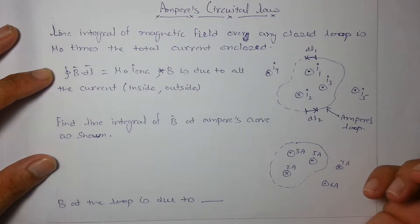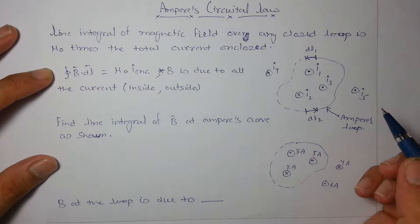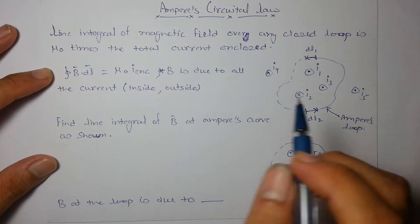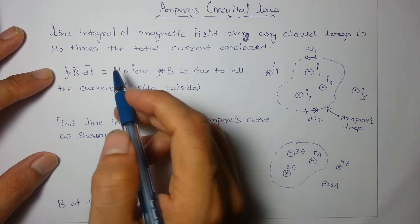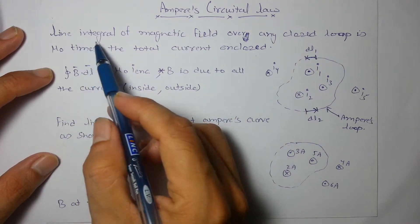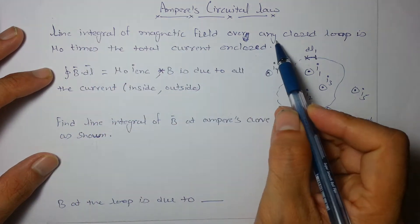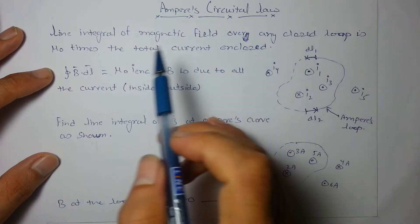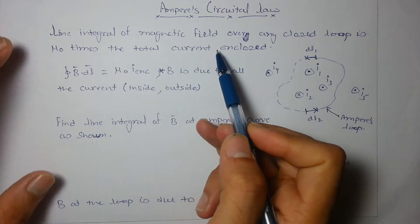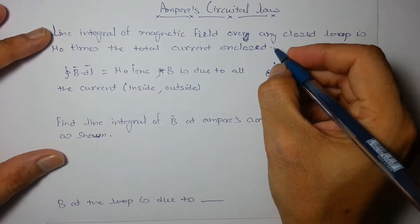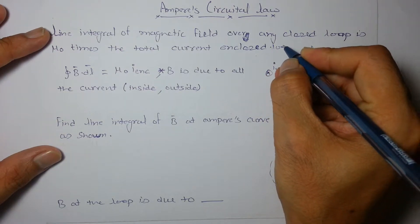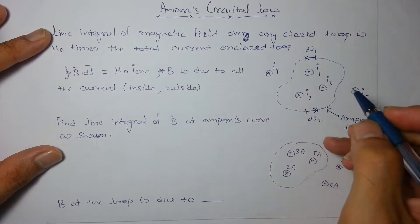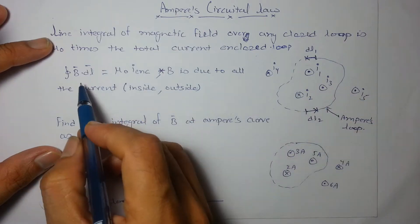Hello friends, in this video we will learn the basics of Ampere's Circuital Law. My name is Hitesh Sharma. The line integral of magnetic field over any closed loop is mu-naught times the total current enclosed by the loop. So what do we mean by line integral?